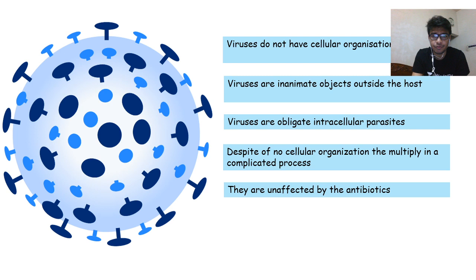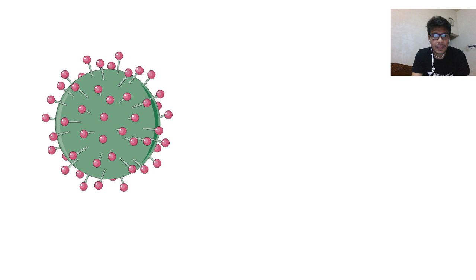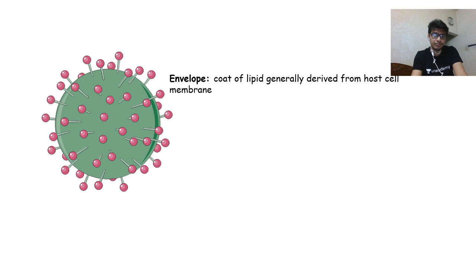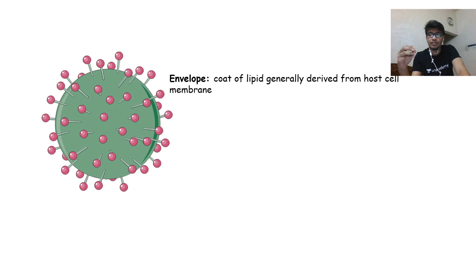Before we get to that topic we should understand the ultrastructure of the virus. I'm not going to linger too much — I'll go fast and just touch on the brief points. First, the virus may or may not have an envelope. The envelope is like a jacket — a coat of lipid which is generally derived from the host cell membrane. When the virus is outside the host it may lack an envelope, but when inside or infecting other hosts it has the envelope.